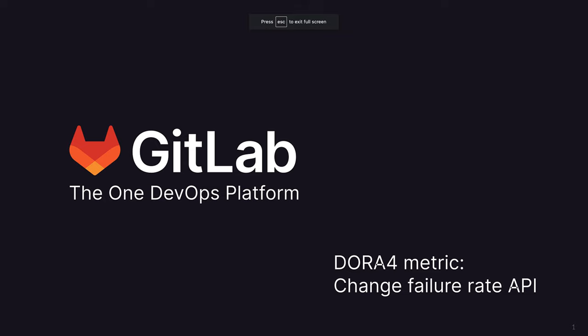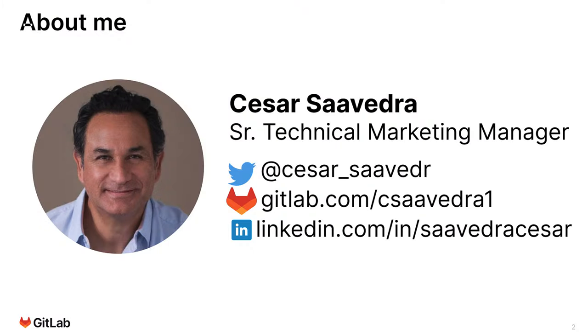When it comes to software delivery and operational performance, the DevOps Research and Assessment, or DORA, has developed metrics to measure the effectiveness of organizations' development and delivery practices. Hi, I'm Cesar Saavedra, Technical Marketing Manager at GitLab.